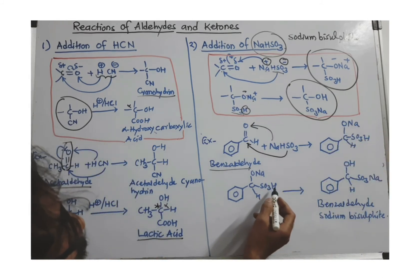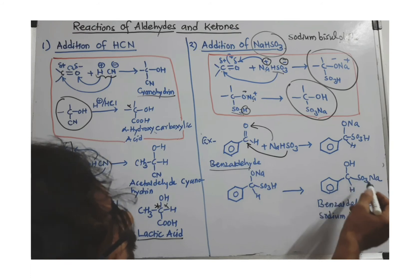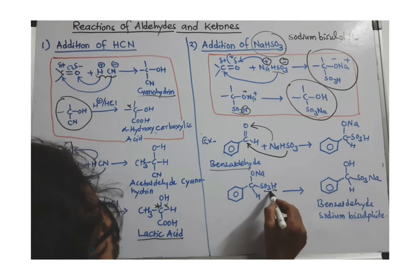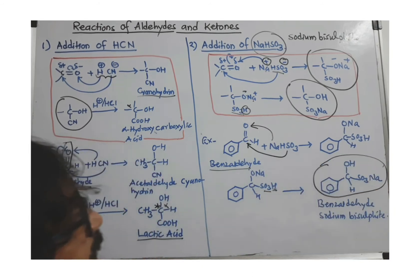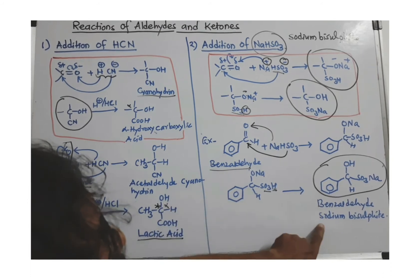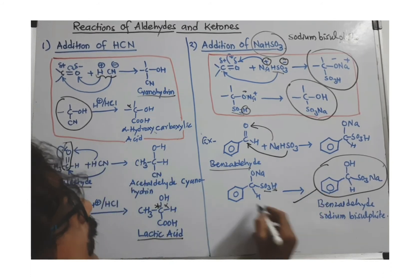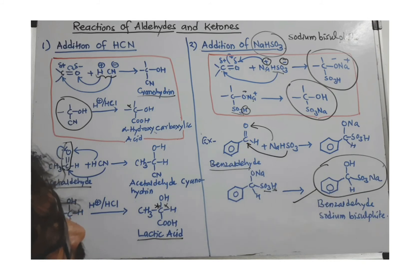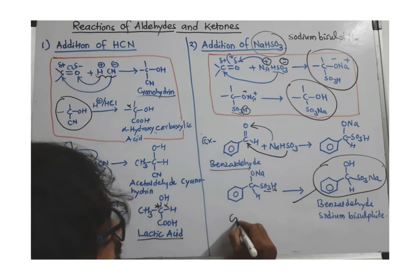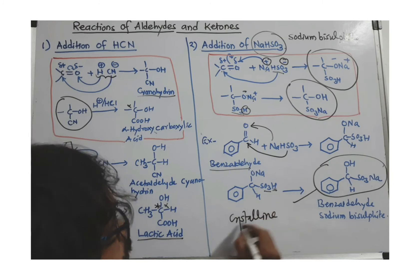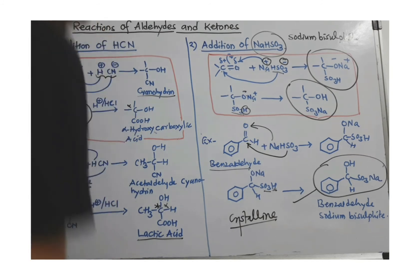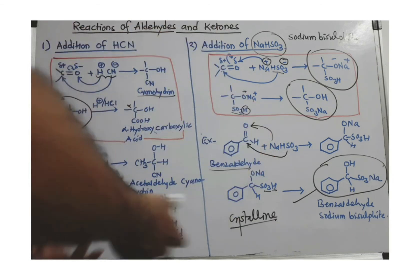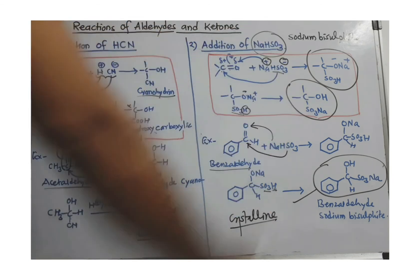This addition product is converted to the hydroxy compound by transferring a proton from SO3H, and Na goes there. So we get the bisulfite compound — this is benzaldehyde sodium bisulfite addition product. All sodium bisulfite compounds of aldehydes and ketones are crystalline, so you can filter them and separate them from other compounds. This is a useful reaction to separate carbonyl compounds — aldehydes and ketones — from others.